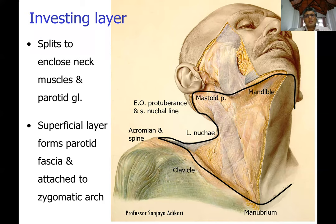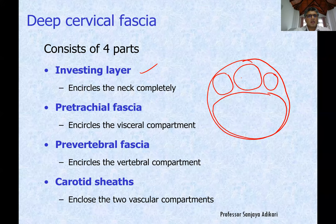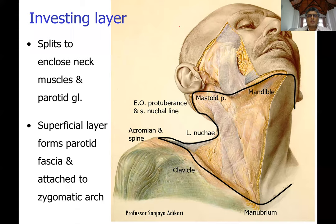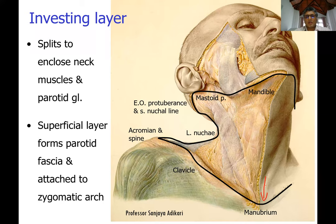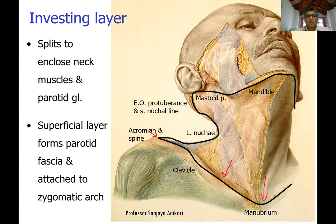The attachments of the investing layer of deep cervical fascia are almost the same as the boundaries of the neck. Starting from one point: the superior border of the manubrium — where it splits to enclose the anterior jugular veins — then the superior border of the clavicle up to the acromion, then a line to the vertebra prominens. It is also firmly attached to the ligamentum nuchae.